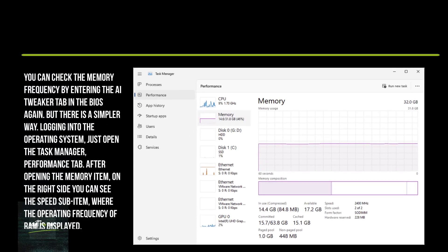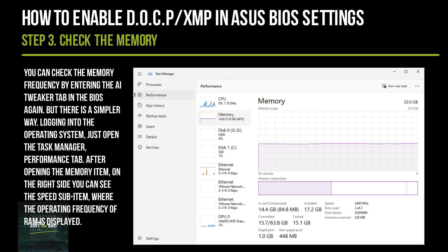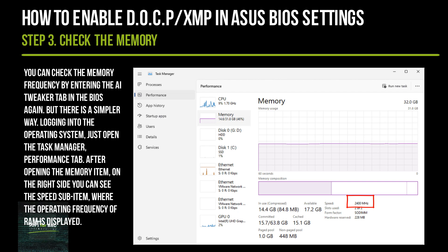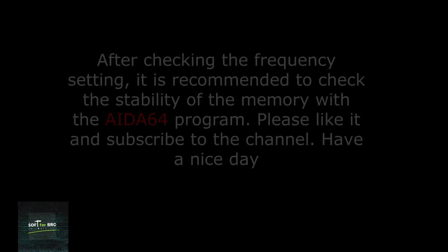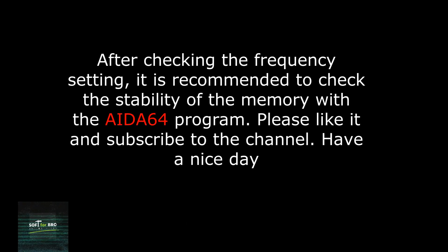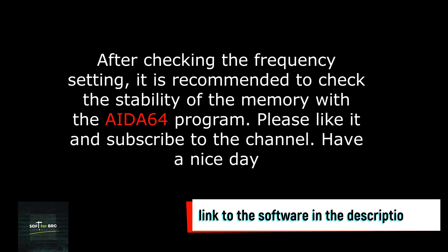You can check the memory frequency by entering the AI Tweaker tab in the BIOS. But there is a simpler way: after logging into the operating system, just open the Task Manager and go to the Performance tab. After opening the Memory item, on the right side you can see the Speed sub-item where the operating frequency of RAM is displayed.